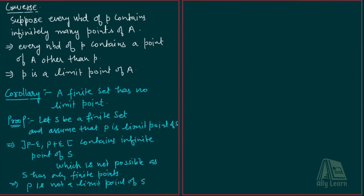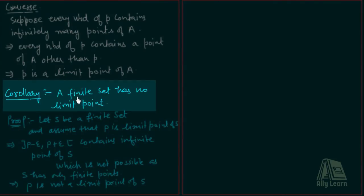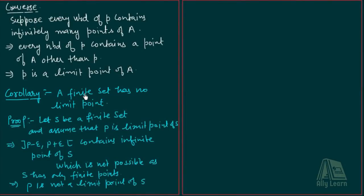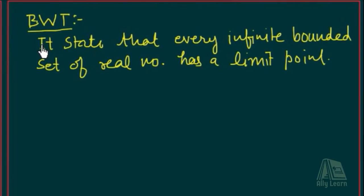Yani agar koi finite set hai hamare paas — agar kisi set mein ek element hai, do element hain, ya phir 10 elements hain, ya phir n elements hain — toh hum yeh keh sakte hain ki uska koi bhi limit point nahi hoga. Ab dekho, humne yeh kaha ki agar finite set hai toh uska koi bhi limit point nahi hoga. Toh kya hamare paas koi aisi condition hai jab hum ensure kar sakein ki is set ke paas kam se kam ek limit point hoga? Yahi condition Bolzano-Weierstrass theorem deti hai.